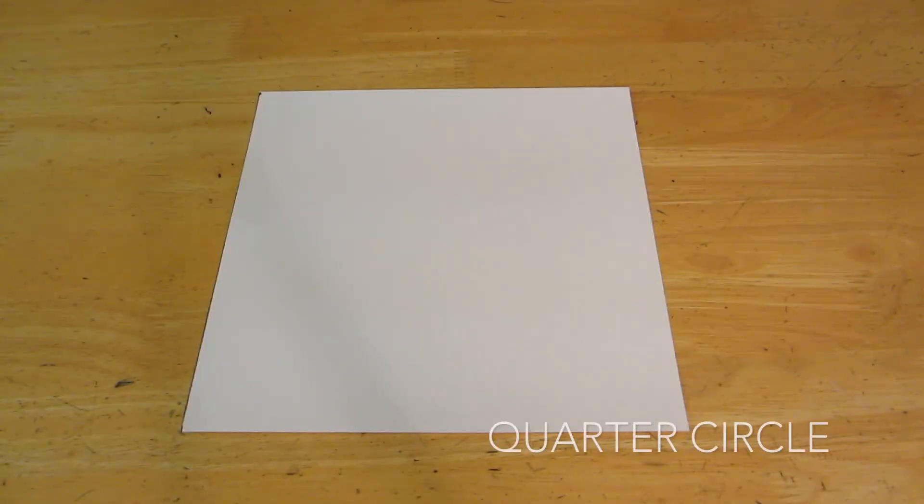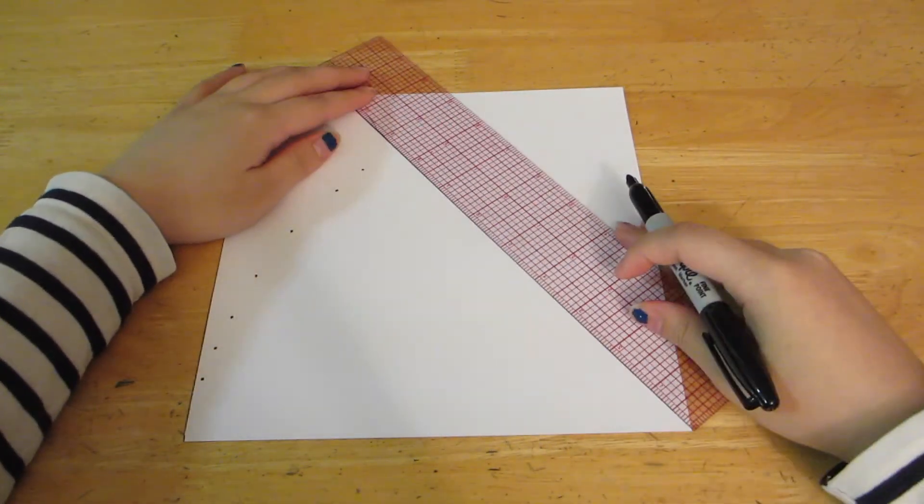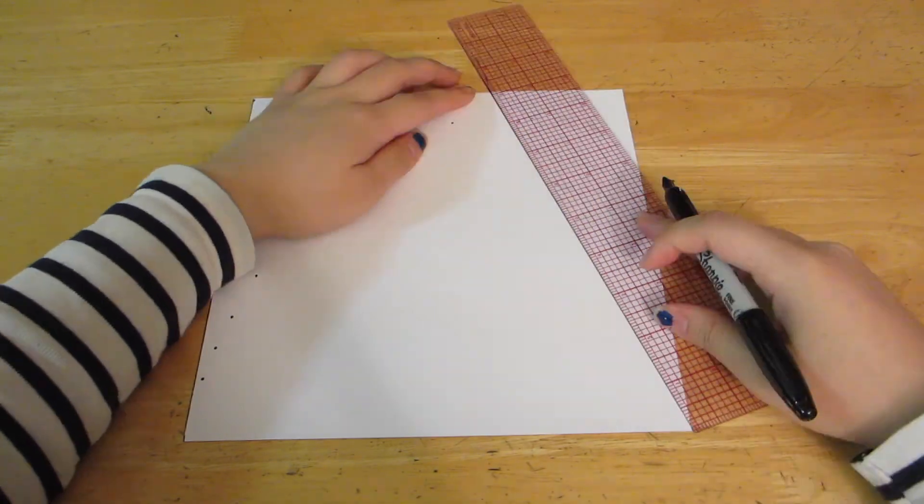If you're making a quarter circle, start off by making a square using your length measurement. Now, pick a corner and start marking off your length measurement along the paper so that you end up with a curved line when you connect the dots.